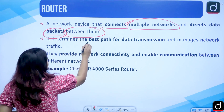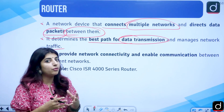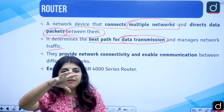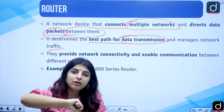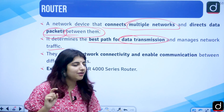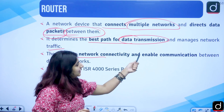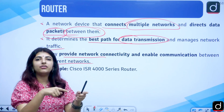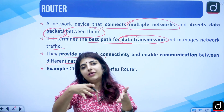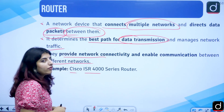The router determines the best path for data transmission and manages network traffic — not road traffic, but network traffic when multiple people are sending data to the same computer. It provides network connectivity and enables communication between different networks. An example is the Cisco ISR 4000 series router.